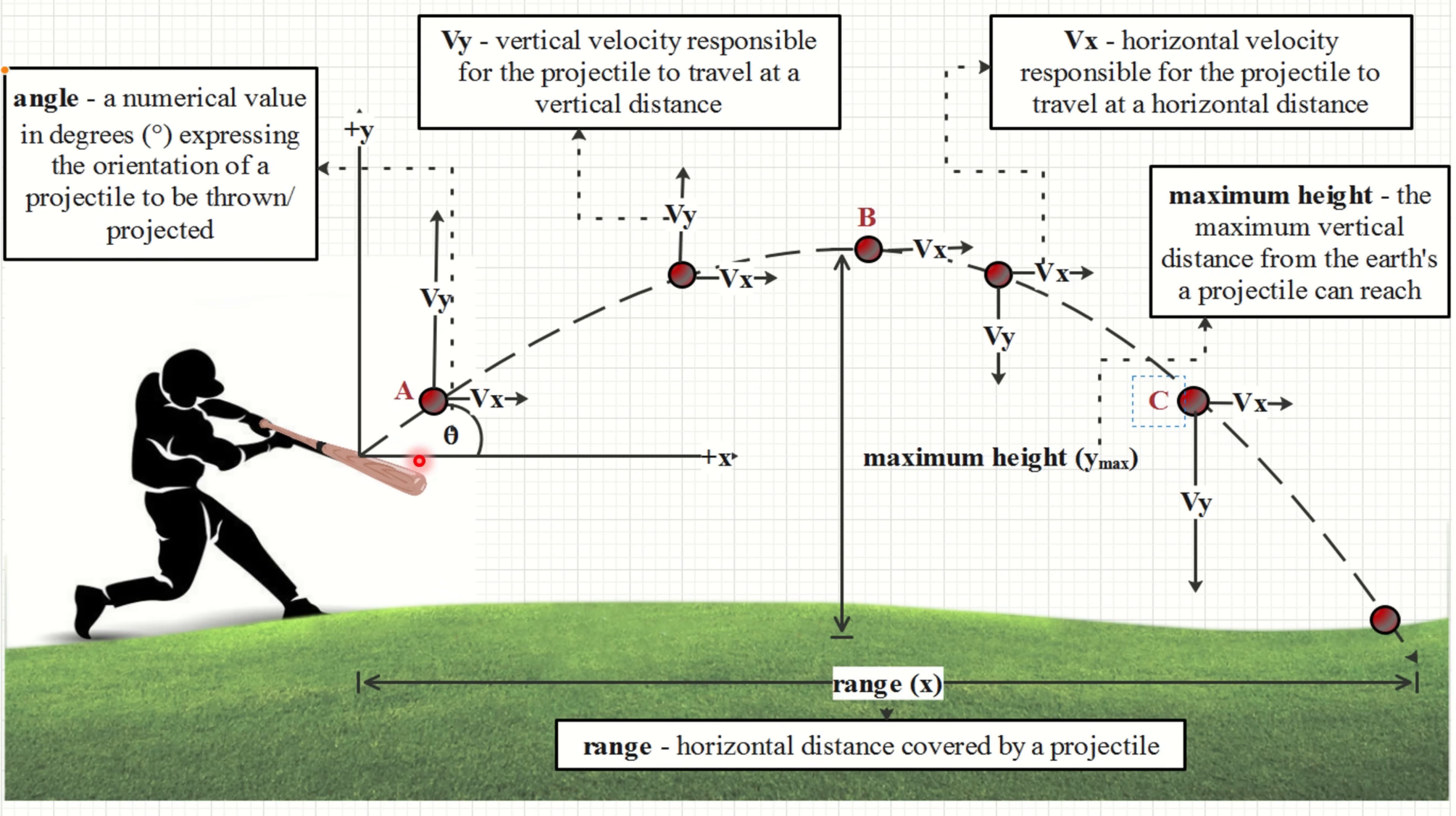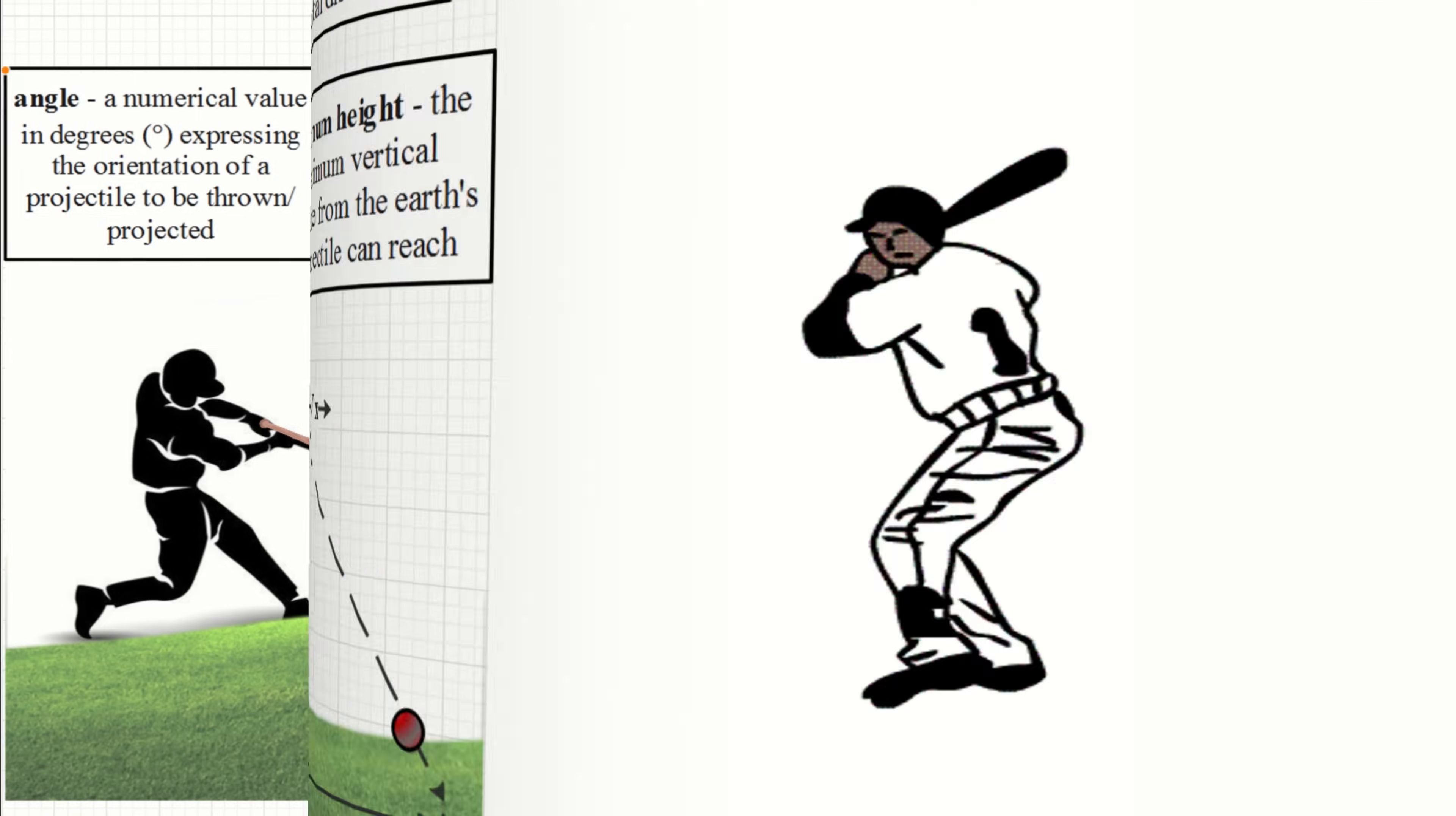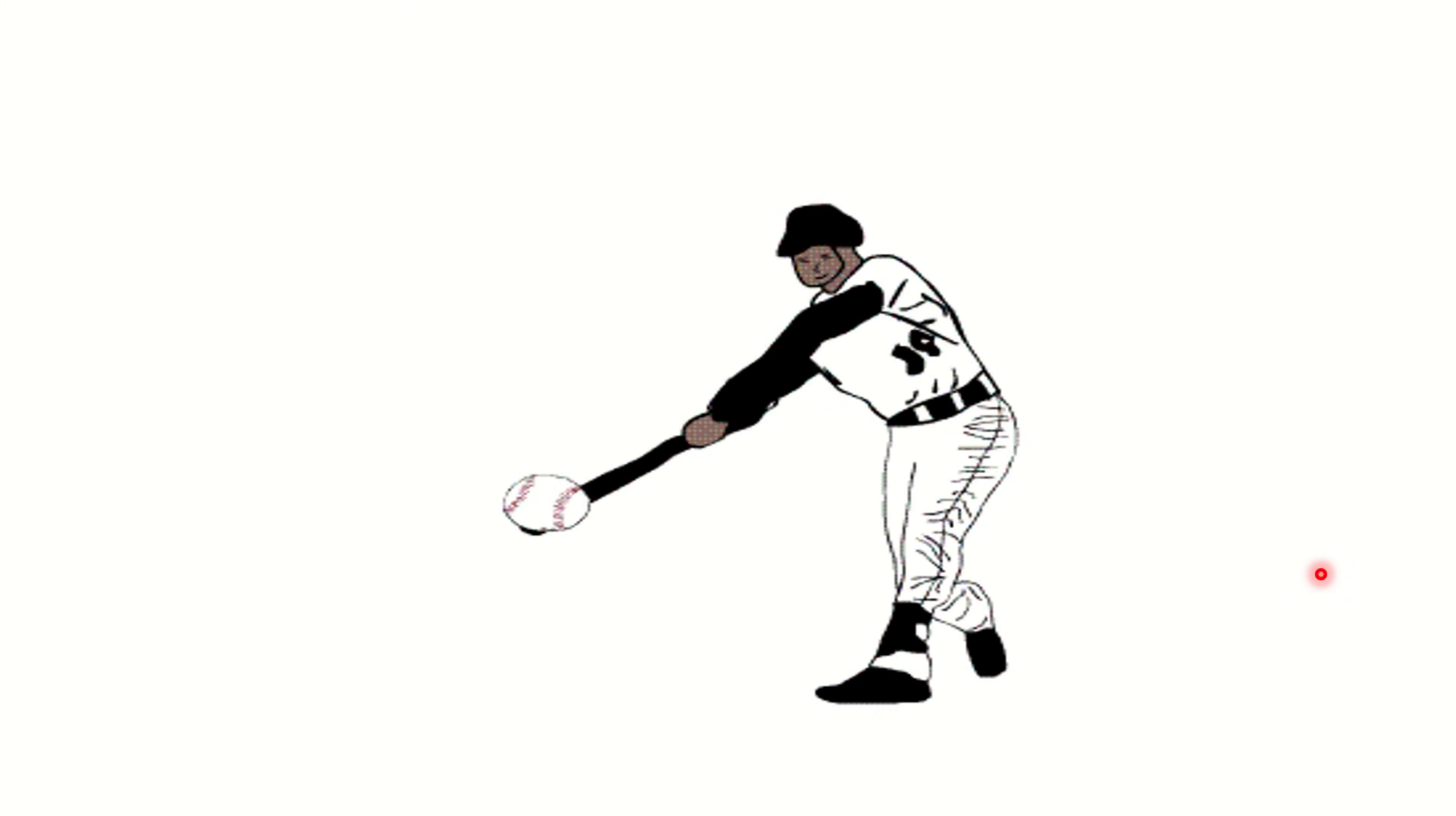So when the vertical velocity of the baseball as it rises to the air decreases due to the opposing direction of gravity towards the motion. When the baseball reaches the maximum height, it momentarily stops, causing the vertical velocity to be zero. When it reaches to the ground, its vertical velocity increases, since the direction of the baseball's motion is the same with gravity. Take note of that, class!